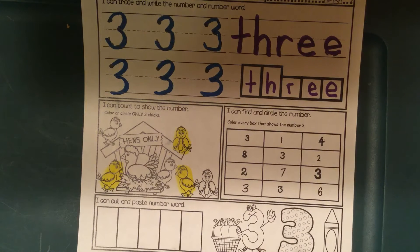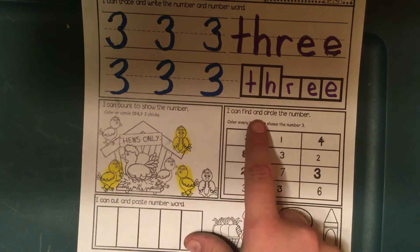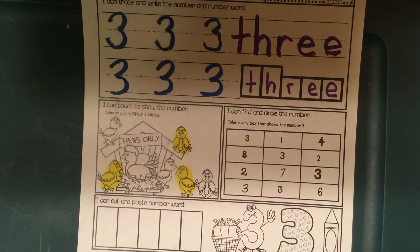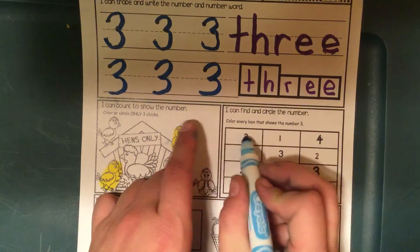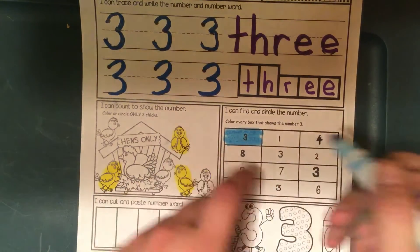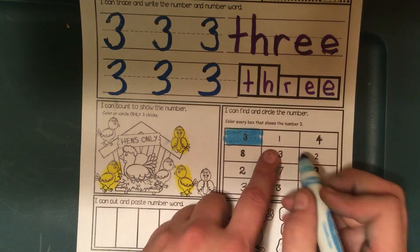Then I'm going to come over and find and color the box. We're going to look for the number Niswe. So I'm going to look at each one. If it's a Niswe, I'm going to color it. If it's not, I'm not going to color it.